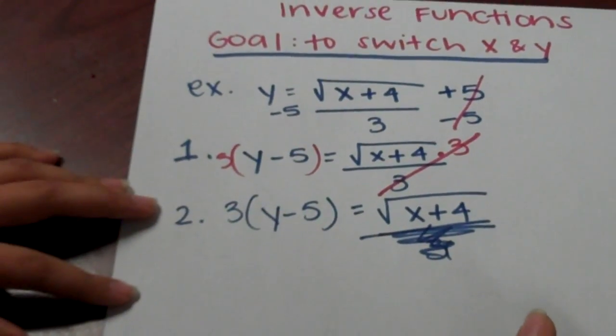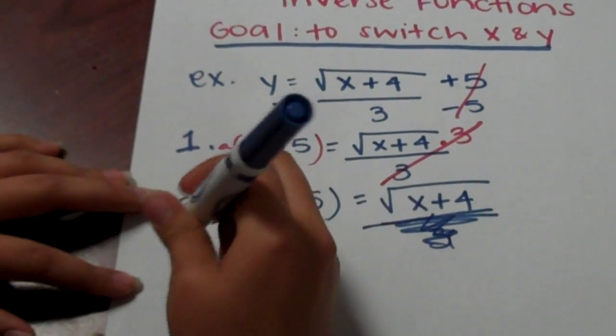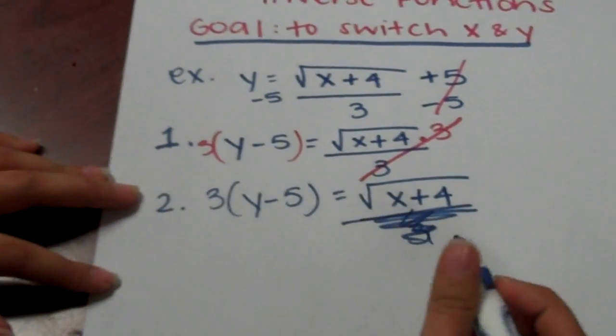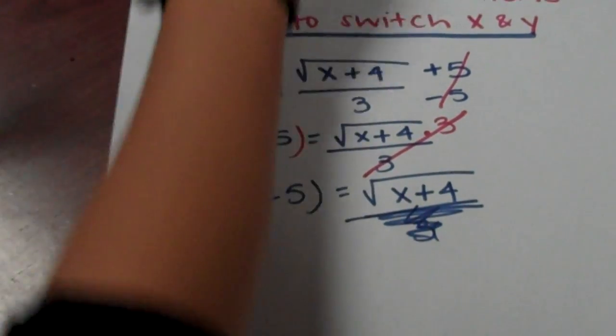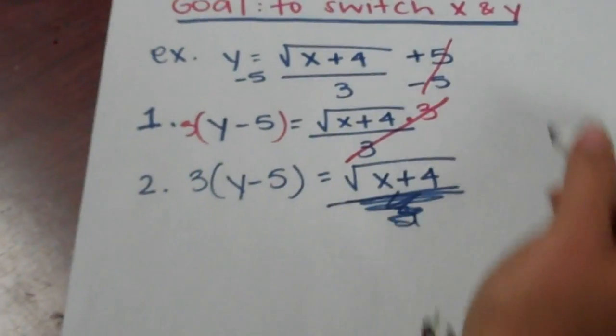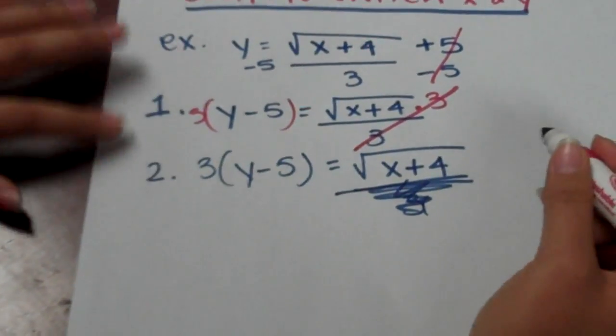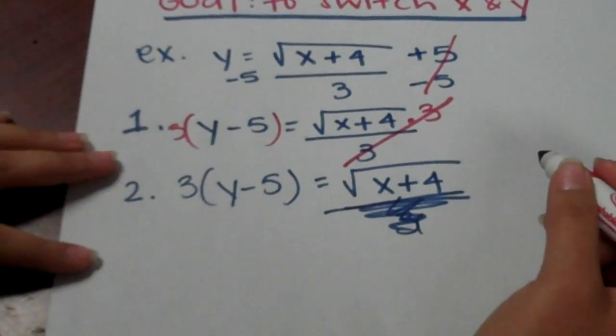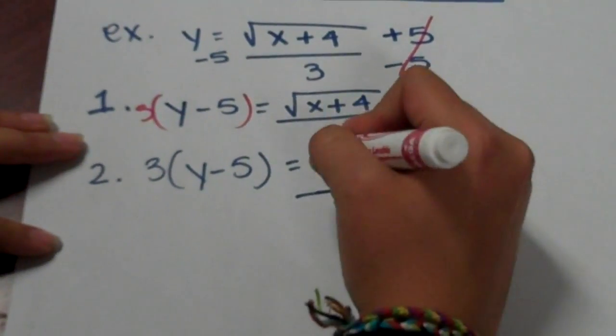Our third step is to then undo the root. To undo the root, we must square both sides of the equation.